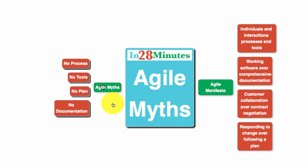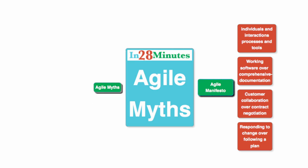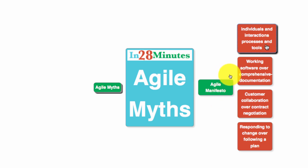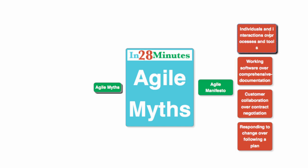So what does the Agile manifesto tell you? The first principle is individuals and interactions over process and tools. What does that really mean? It means the interactions between people are more important than following strict processes and tools. The focus in Agile is on the interaction and communication more than the process.